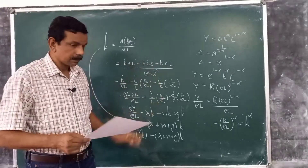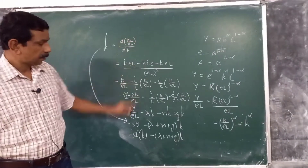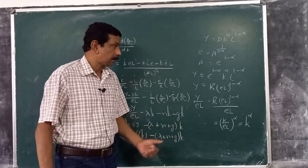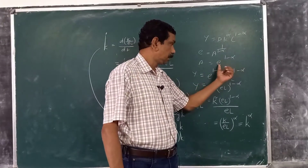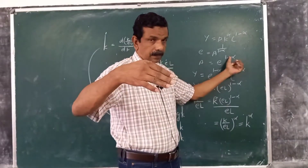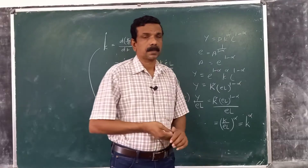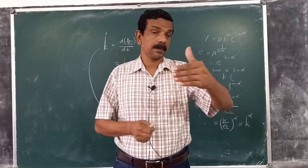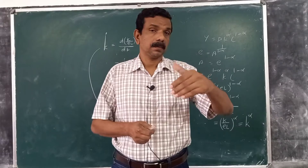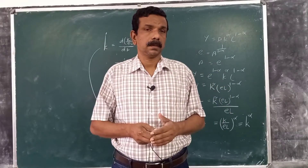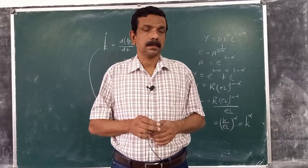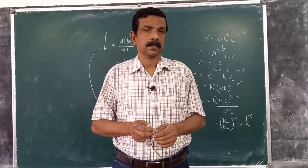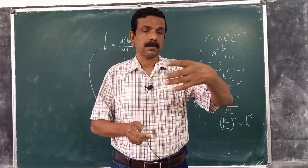This is how we derive the steady state in the Solow model with technical progress, where e-dot by e is the rate of growth of technology — the rate at which effective labour is increasing. We have now covered the Solow model without population growth, with population growth, and with technological progress. In succeeding classes, we will give a critical appraisal of the model and also address the issue of convergence in terms of the Solow model of growth.